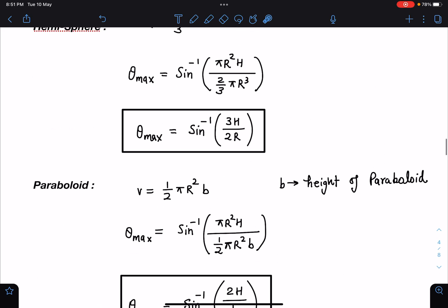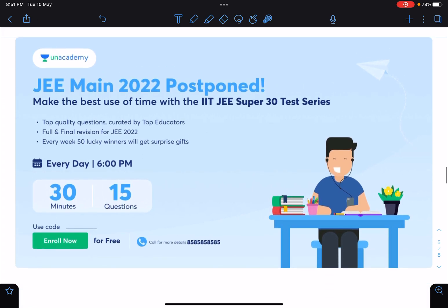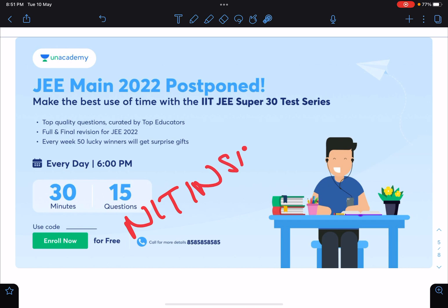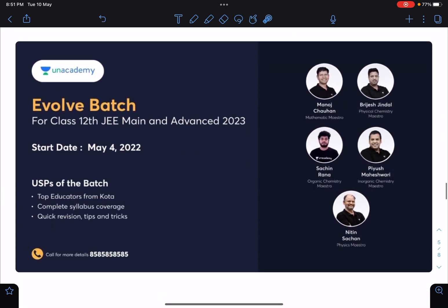So I hope you have enjoyed this problem. This information about JEE Mains 2022: since we have got some little extra time here, you can write these free tests on Unacademy. These are like rapid fire kind of 30 minutes, 15 questions, and 50 lucky winners will be getting surprise gifts. You can use my code Nitin sir in order to enroll for these tests.